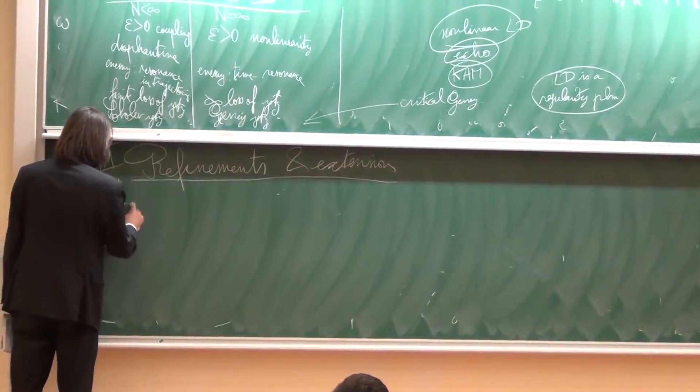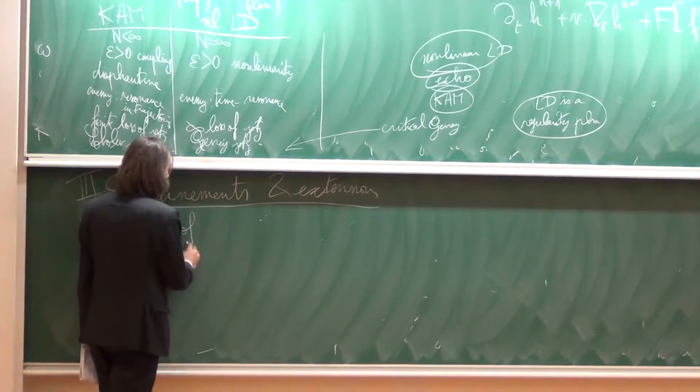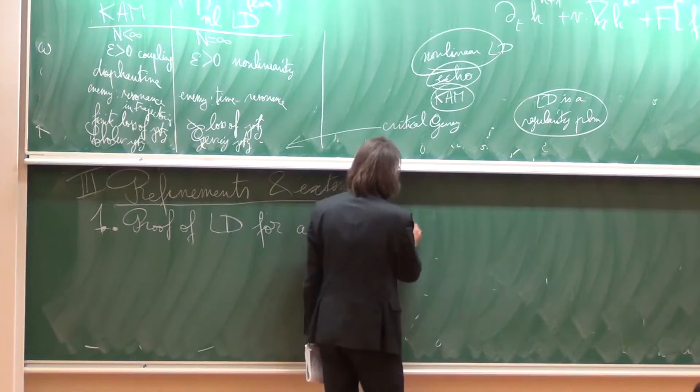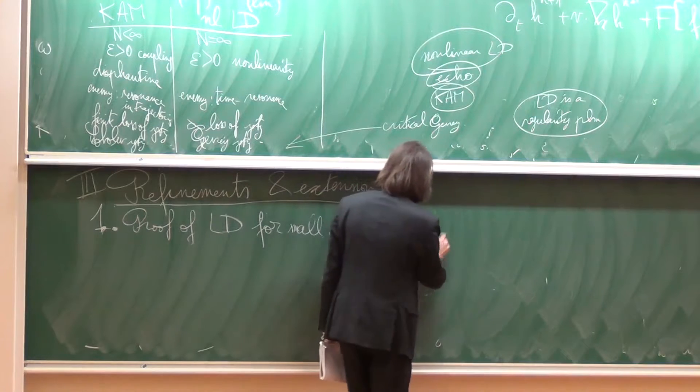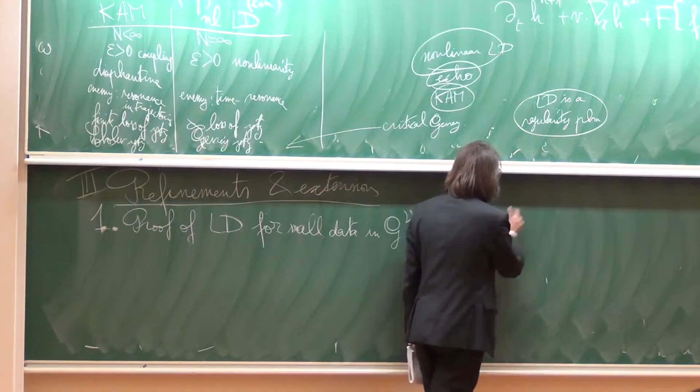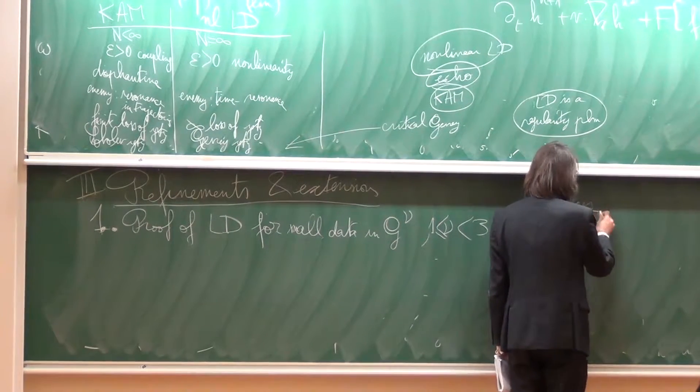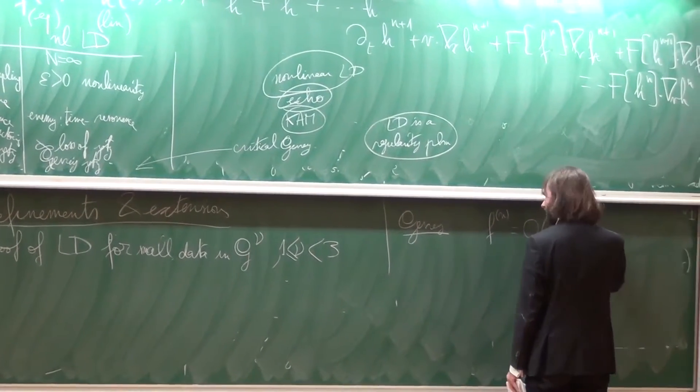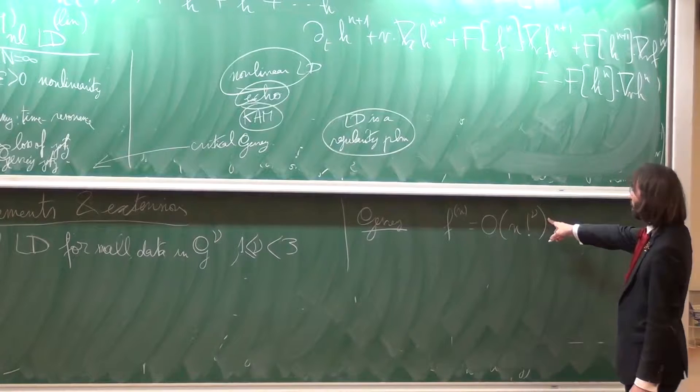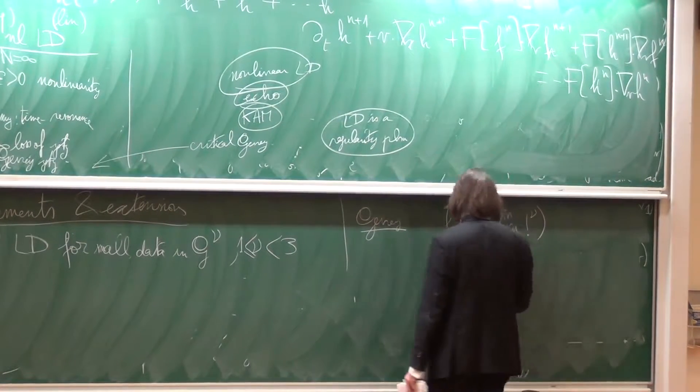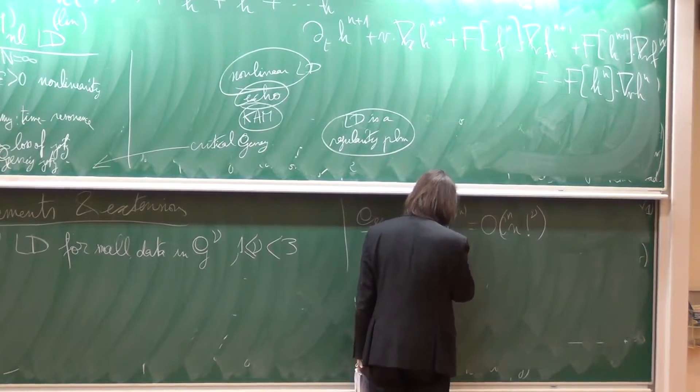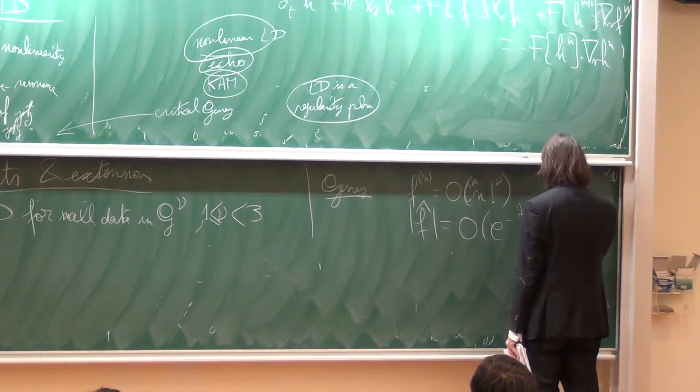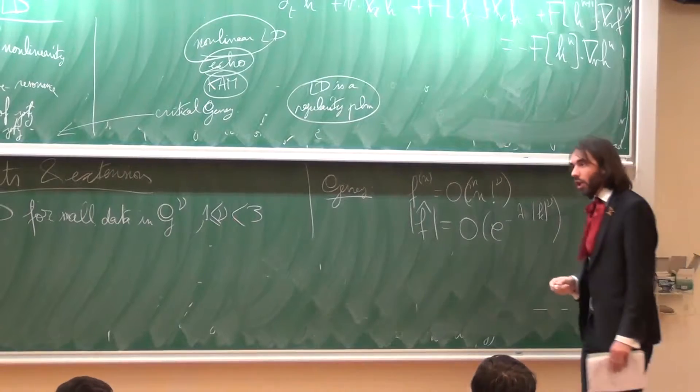So the first one is that the proof of nonlinear damping is corresponding for all data in G_nu, for small data in G_nu, nu between one and three. Let's recall that Gevrey, you have two ways to define it, to form a Gevrey function. One is to say that the derivative of order n is like n factorial to the power nu, with a constant if you want. And the other is to say that the Fourier transform is O of exponential minus lambda k to the nu. These are the two ways to define a Gevrey function.